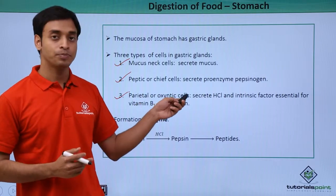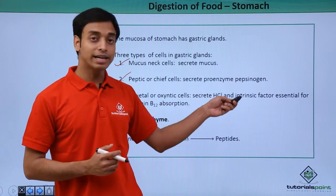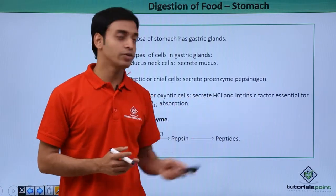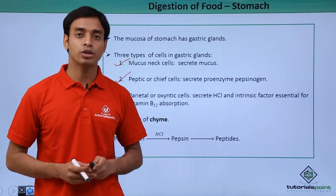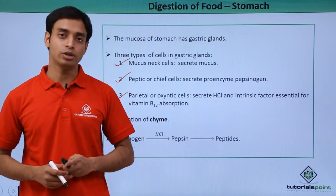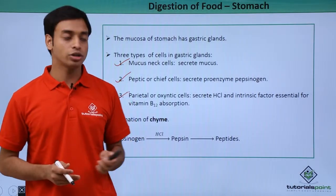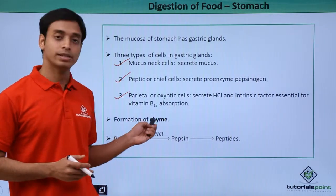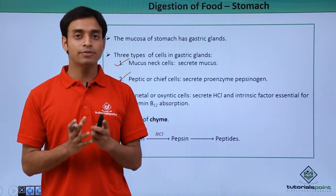The third type of cells are known as the parietal or the oxyntic cells. These secrete HCl and the intrinsic factor, which are essential for the absorption of vitamin B12. In the stomach, the formation of chyme also takes place.